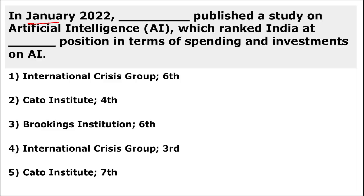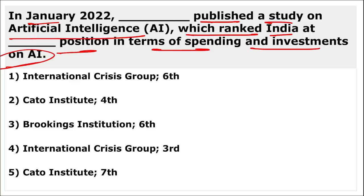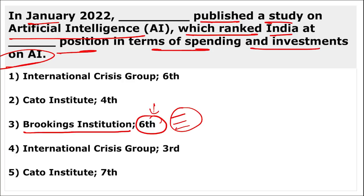As per the Brookings Institution study on Artificial Intelligence published in January, India was ranked sixth in terms of spending and investment in the AI field.